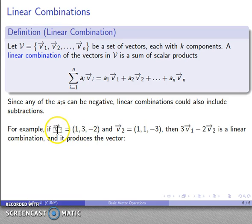So for example, if I have vectors v1 is (1, 3, -2) and v2 is (1, 1, -3), then I can talk about 3v1 minus 2v2. And this is a linear combination, and the vector that it produces. Well, let's take a look at that.